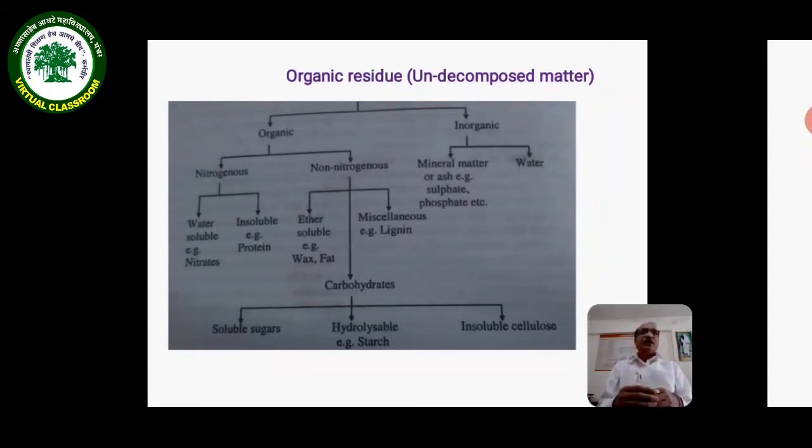Second is miscellaneous lignins, and third is carbohydrates. Carbohydrates are further divided into three parts: soluble sugars, hydrolyzable starch, and insoluble cellulose.